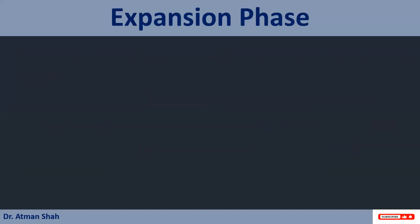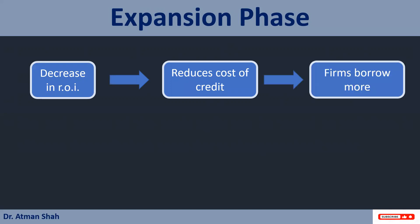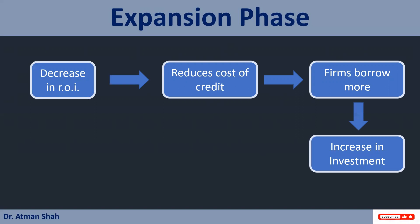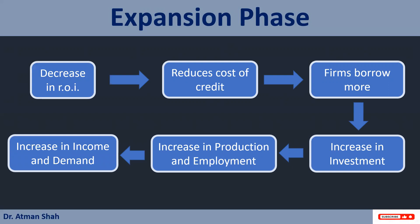So what is the expansion phase? A decrease in the rate of interest leads to a reduction in the cost of credit, and therefore firms borrow more money from the banking system. Higher the borrowing, higher the investment. Increase in investment leads to an increase in production and employment, and therefore we have an increase in income and demand. So this is the expansion phase — a decrease in the rate of interest leads to increasing income and demand.